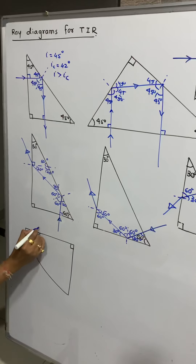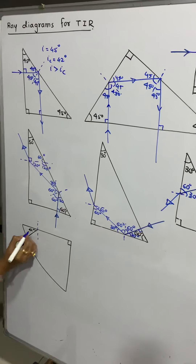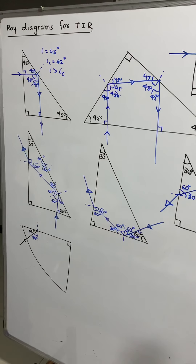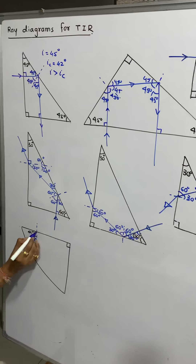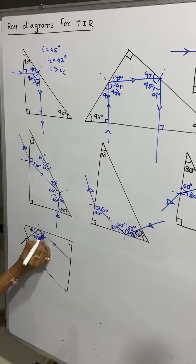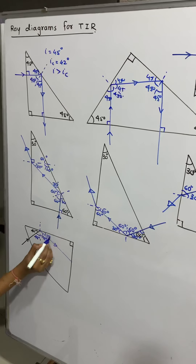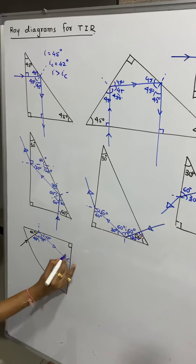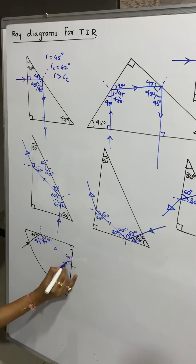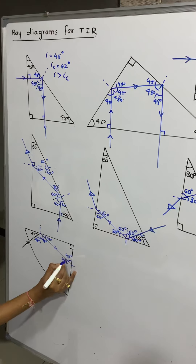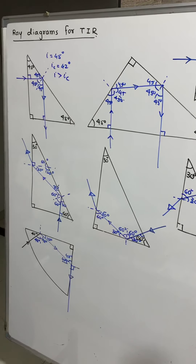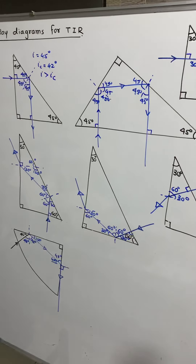Over here, the normal is drawn again. This angle is 42 degrees, so this angle of incidence is 48 degrees — more than the critical angle. Therefore it will reflect like this. This is again 48 degrees. This is 42 degrees, this is 90 — obviously this is 48. I will draw the normal here. This is 42 degrees, which is the critical angle, so the refracted ray will go like this. Right? That's it for this video. Thank you.